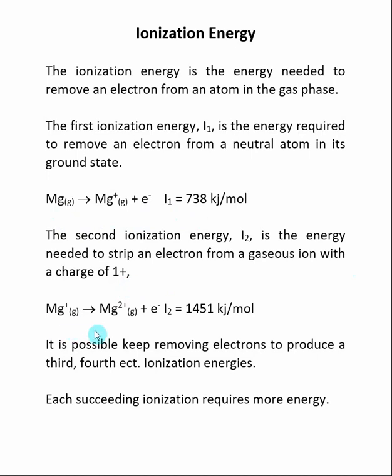Here we can take magnesium plus and remove another electron from it to make magnesium 2 plus, and this will have I2, or the second ionization energy.